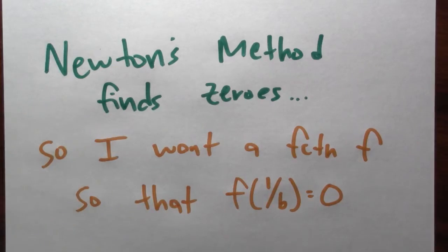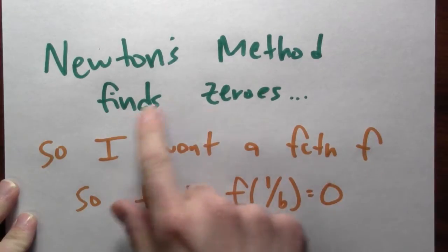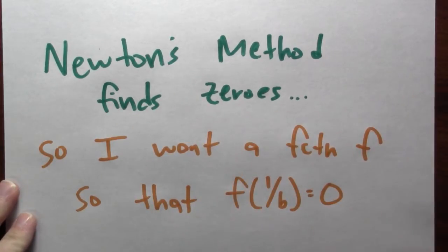Now, how are we going to use Newton's method? Well, Newton's method is really a trick for finding zeros of a function. So if I want to approximate one divided by b, the reciprocal of b, what I really want to find is some function where that number is a zero of the function. Newton's method will help me approximate that zero and consequently help me approximate one over b.